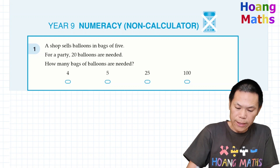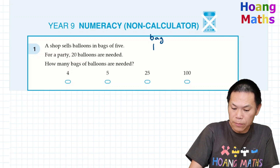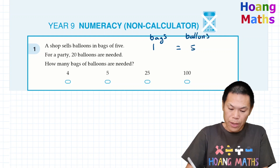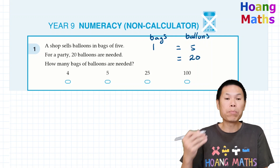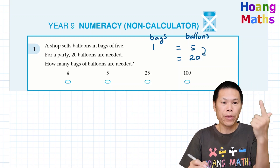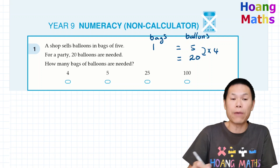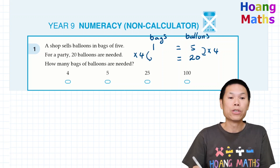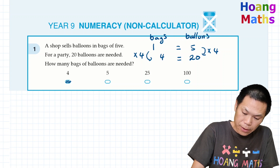So first of all, we need to write down that one bag is equal to five balloons. And in a party, we need 20 of them. So how many bags do we need? From 5 to 20 — we go 5, 10, 15, 20. So we need to times by 4 to get 20. So 5 times 4 is 20. Therefore, on this side, we times by 4 as well: 1 times 4 is 4. So we need 4 bags.